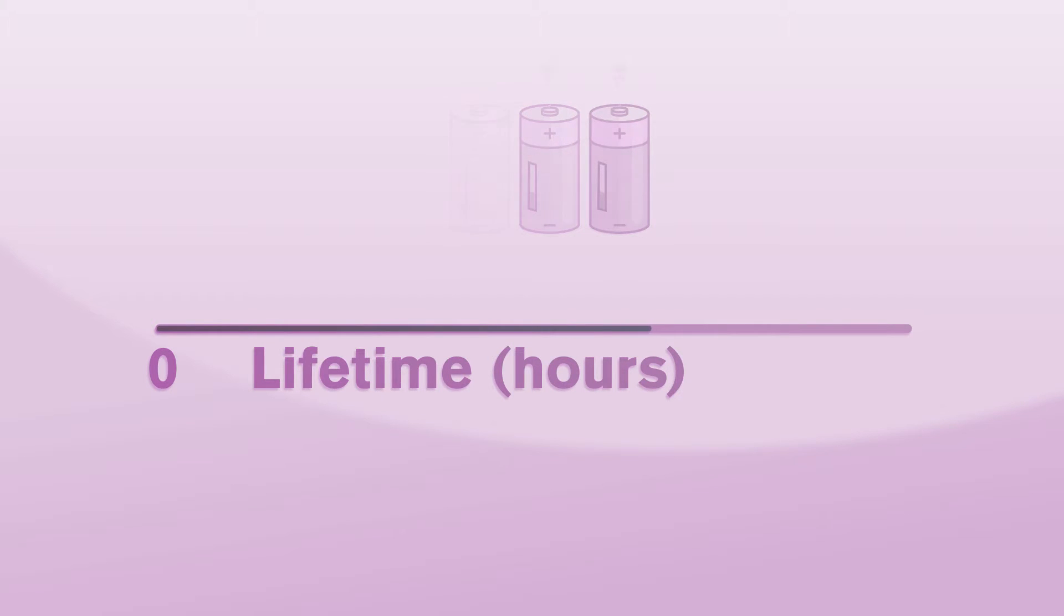Since the lifetimes, measured in hours for example, exhibit variability, we consider battery lifetime which is our measure of interest to be a random variable. Using notation, the random variable, denoted by x, may be considered as assuming values according to the following model.